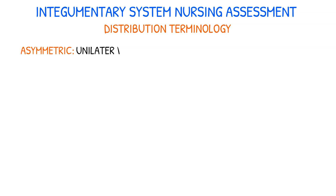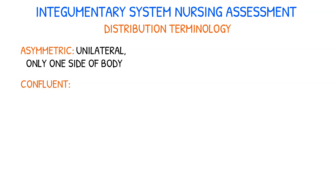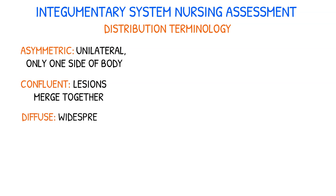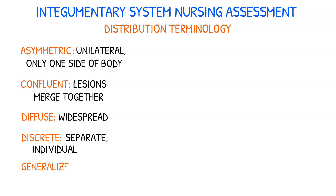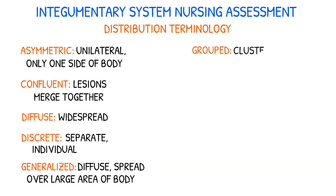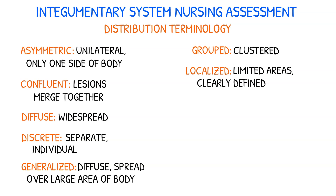Distribution terminology includes the following terms. Asymmetric is a unilateral distribution of lesions, meaning they are present on only one side of the body. Confluent distribution refers to lesions that merge together, making it difficult to see where one lesion ends and another begins. Diffused lesions are usually widely spread over the body. Discrete distribution refers to lesions that are separate from other lesions, such as separate individual spots of chickenpox. Generalized lesions are diffused and spread over a large area of the body. Grouped lesions are a cluster of lesions located closely together. Localized distribution refers to limited areas of involvement that are clearly defined, such as psoriasis on the elbows and knees.